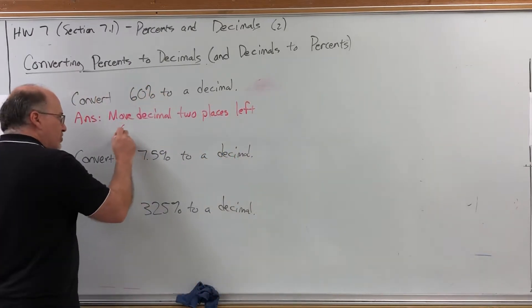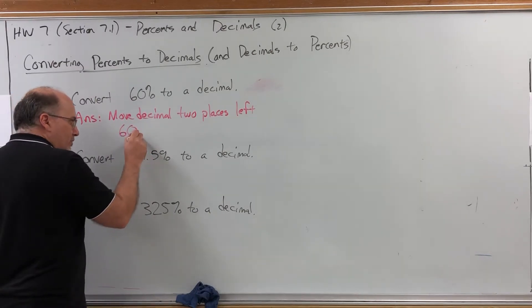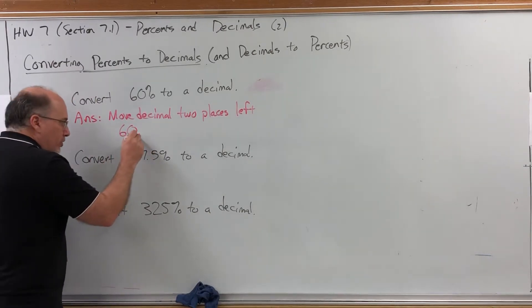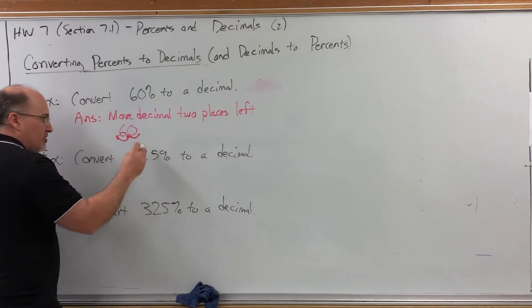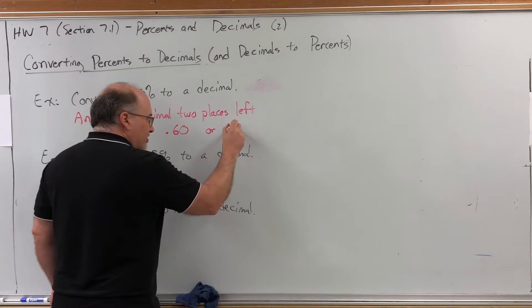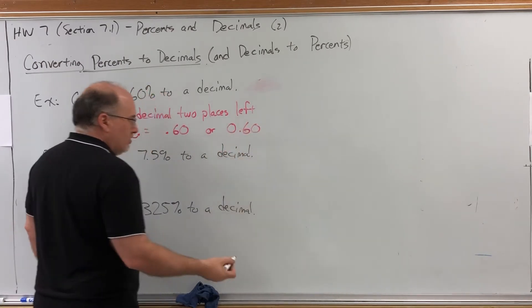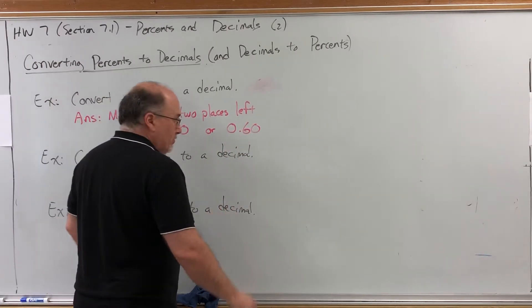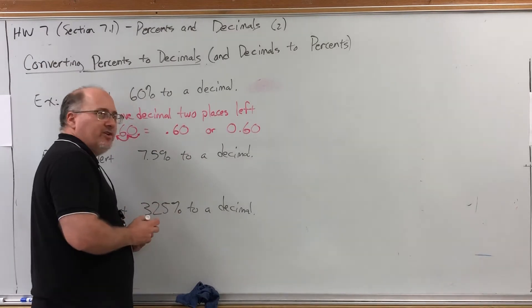So 60% as a number, as a decimal, is after the zero. So we would move it one, two places to the left and get 0.60, or you could say 0.6 because the zero at the end isn't necessary.